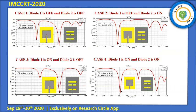Since we use two diodes in the ground plane, there are four possible conditions: 00, 01, 10, and 11. In Case 1 (00), both diodes are off, and we obtain two frequencies: 3.6 GHz and 6.6 GHz with return loss of −15.2 dB and −19.5 dB respectively. In Case 2 (01), diode 1 is off and diode 2 is on, giving a single frequency of 3.6 GHz with −19.17 dB. In Case 3 (10), diode 1 is on and diode 2 is off, giving 6.6 GHz with −21.28 dB. In Case 4 (11), both diodes are on, giving two frequencies of 4.1 GHz and 8.8 GHz with return losses of −16 dB and −15 dB respectively.